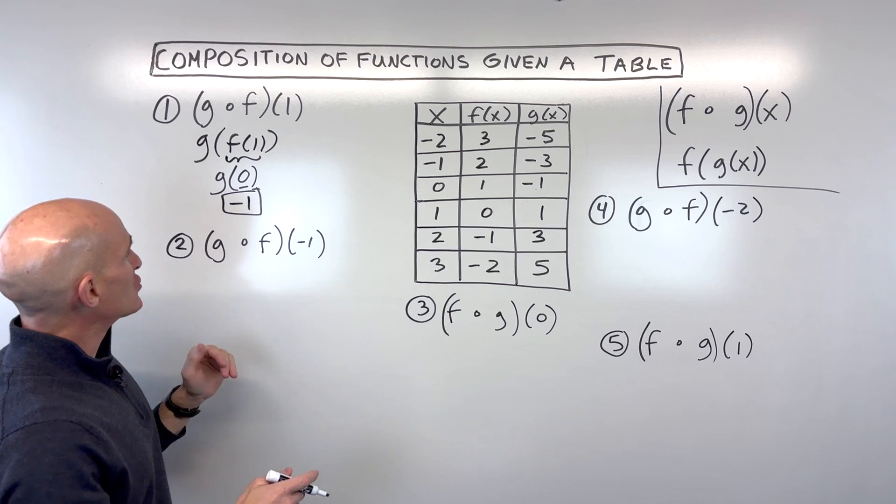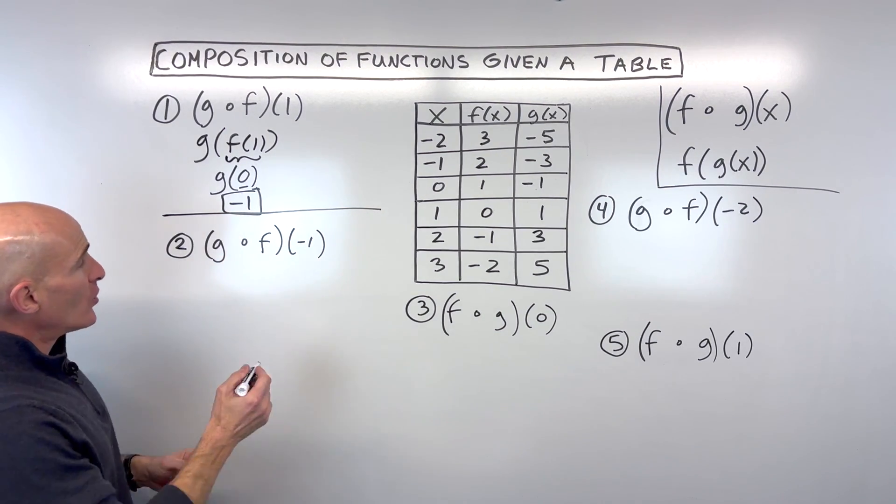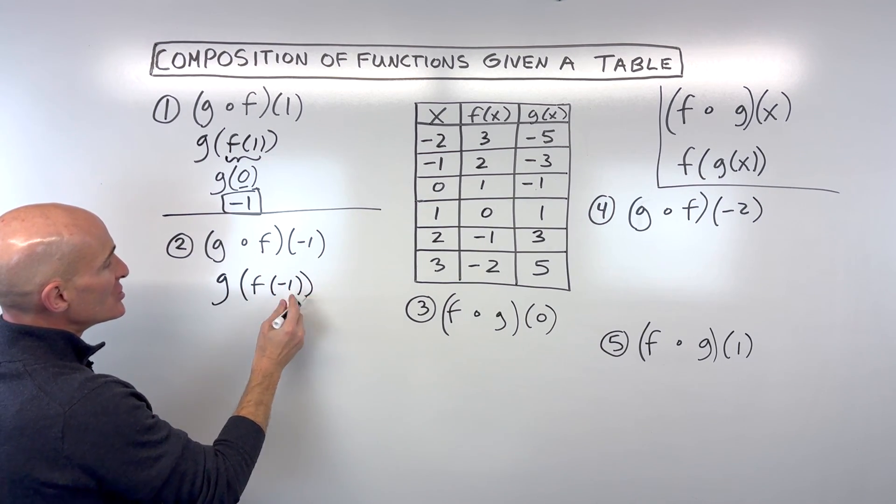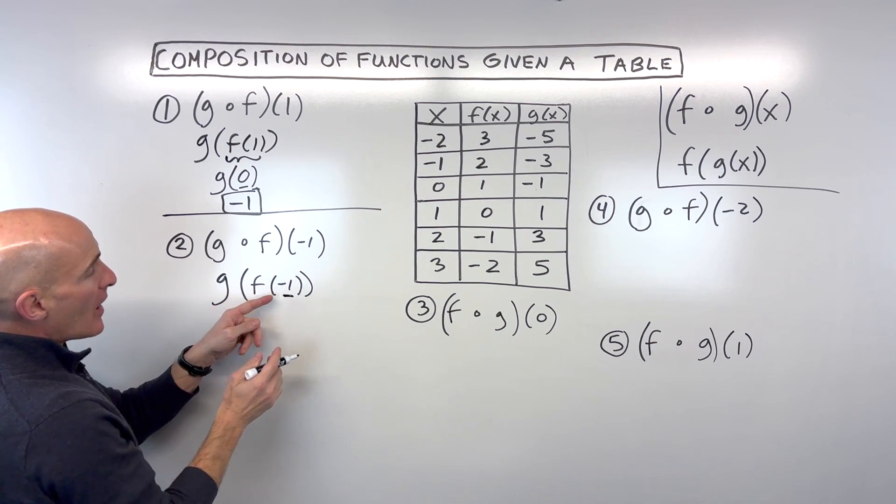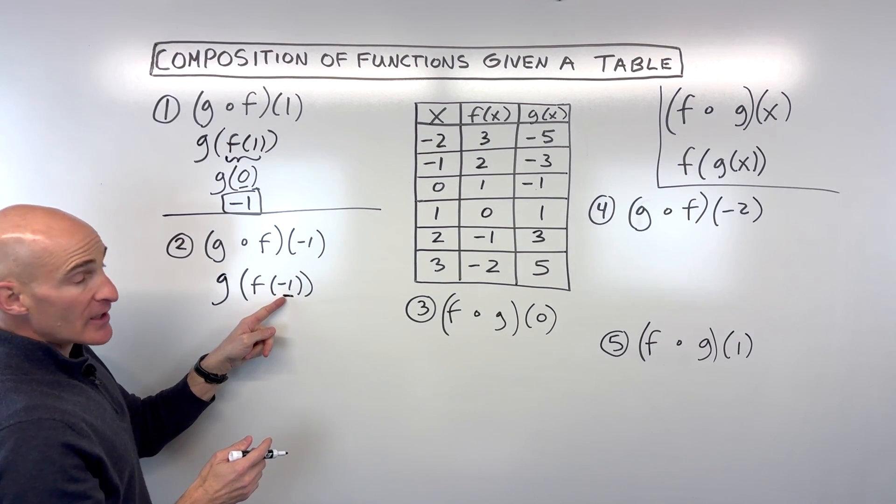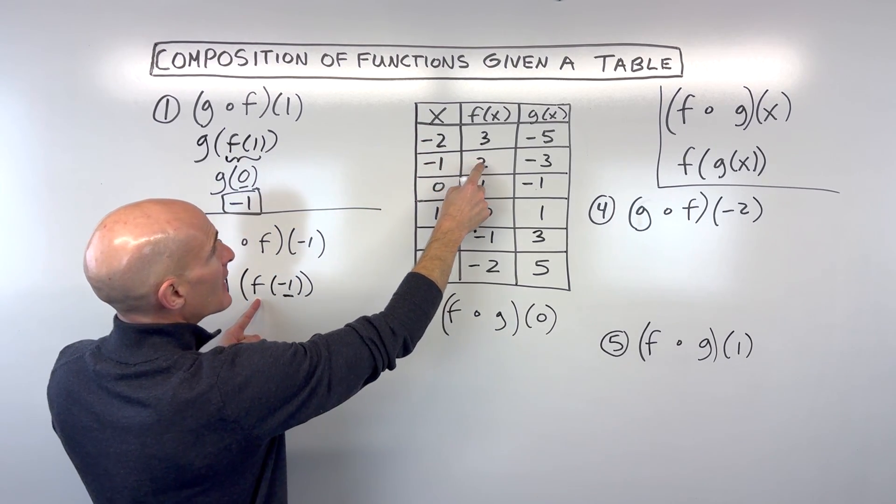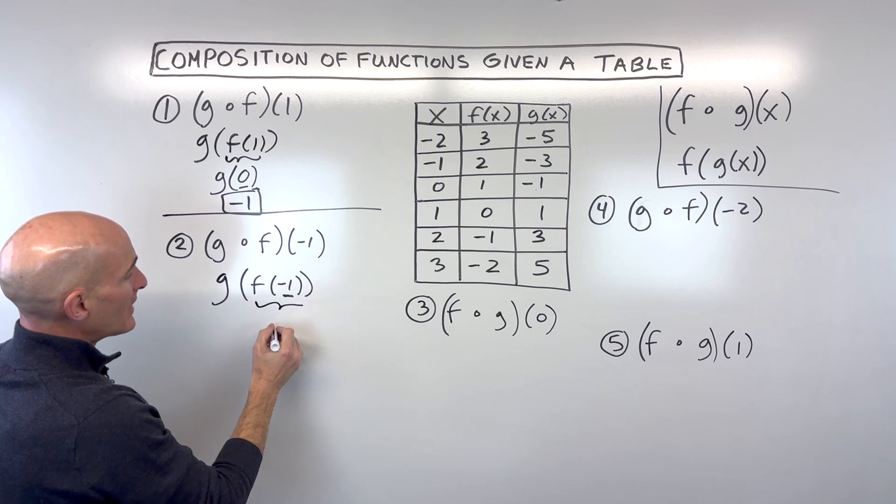Let's go to number two. We have g of f of negative one. Again, another way to think about this is writing it in a slightly different notation: g of f of negative one. We start from the inside and work our way out. So if negative one is our input in our f function, then x is negative one, and the output for our function is two. This whole quantity is two.